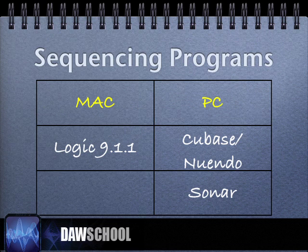To produce your music, our focus is on sequencing programs. On the Mac with Snow Leopard, Logic 9.1.1 is native 64-bit. On the PC, Cubase, Nuendo, and Sonar are 64-bit native.